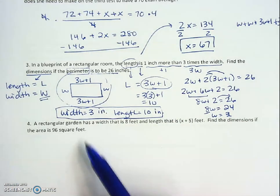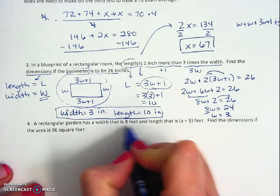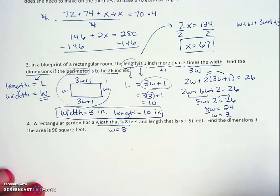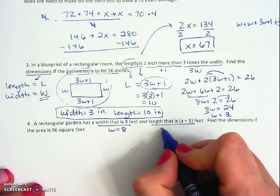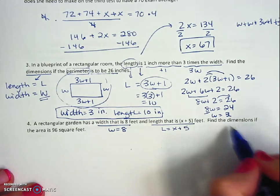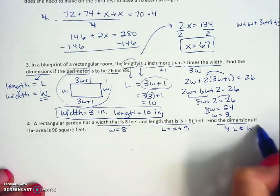And then for this next one we have a rectangular garden. Now it has a width that is 8 feet, so w equals 8, and a length that is x plus 5, so l equals x plus 5. Find the dimensions—that means I'm finding length and width, that's what I'm looking for.